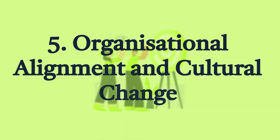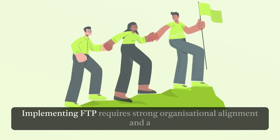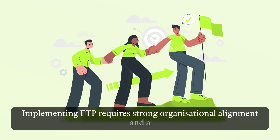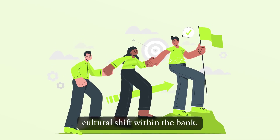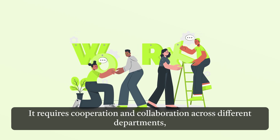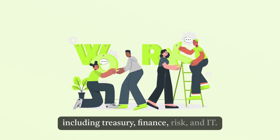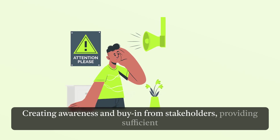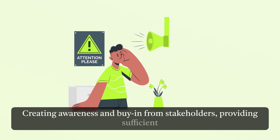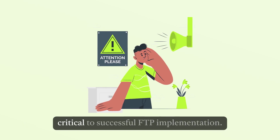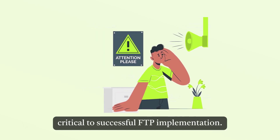Challenge 5: Organizational Alignment and Cultural Change. Implementing FTP requires strong organizational alignment and a cultural shift within the bank. It requires cooperation and collaboration across different departments, including Treasury, Finance, Risk, and IT. Creating awareness and buy-in from stakeholders, providing sufficient training and support, and managing change effectively are critical to successful FTP implementation.